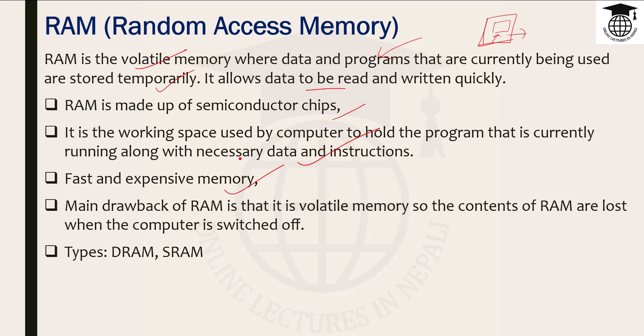RAM is the working space used by the computer to hold the program that is currently running, along with necessary data and instructions. It is very fast and very expensive. The main drawback of RAM is that it is volatile memory — when we turn off the computer, it clears the data.